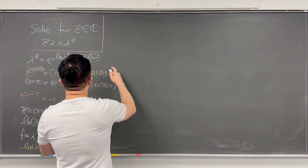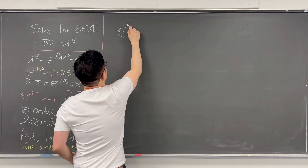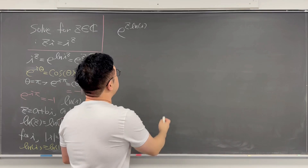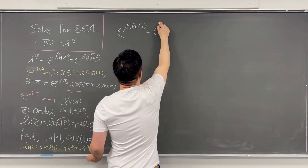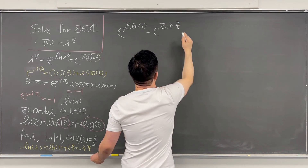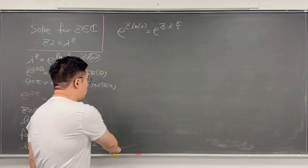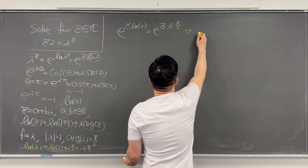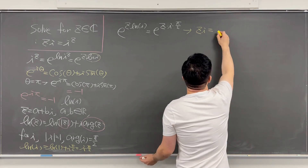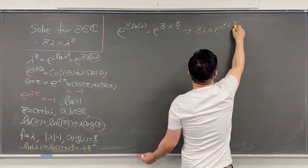Using this result, we can rewrite the equation. Going back to e to the power of z times ln(i), this becomes e to the power of z times i times pi/2. So our equation zi equals e to the power of z*i*pi/2.